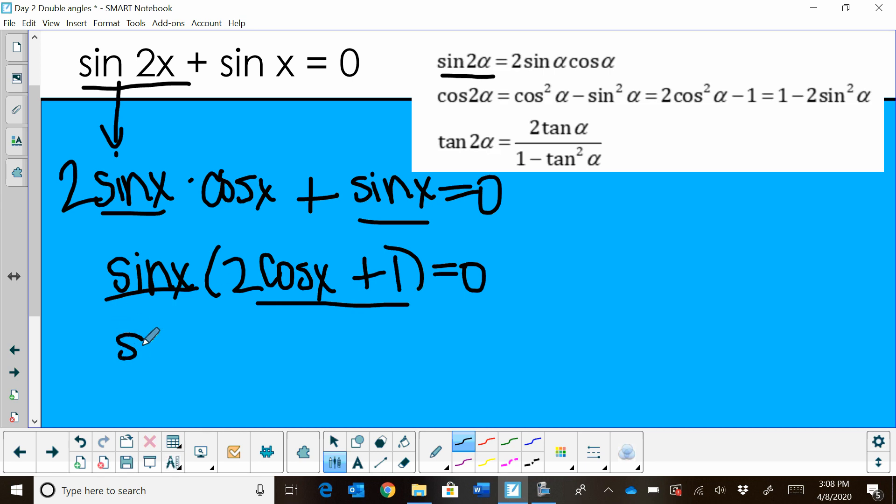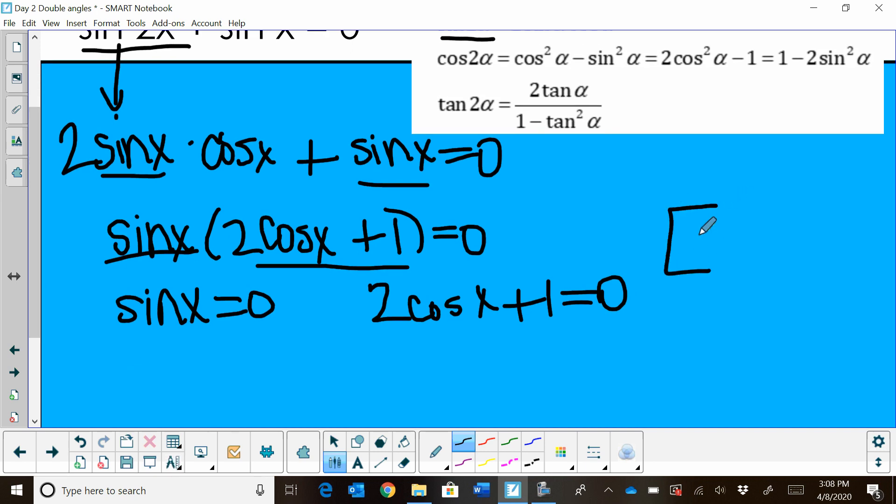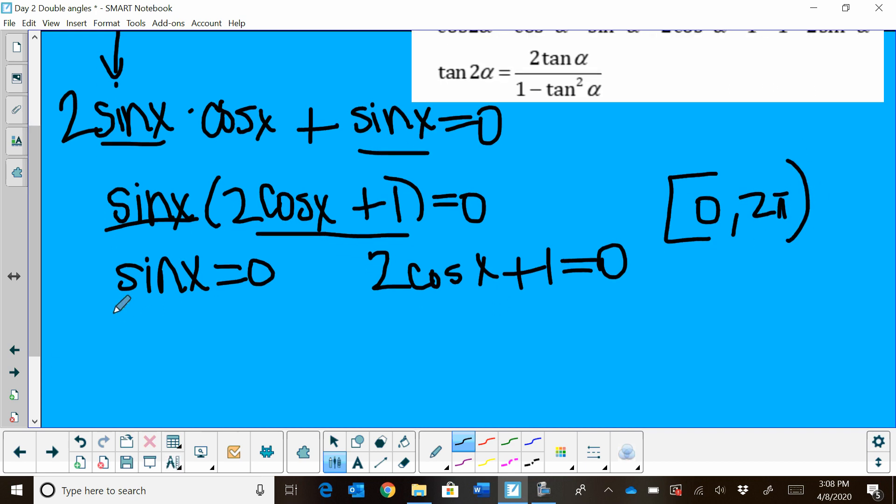So you're going to set sine x equal to zero because it's just a monomial, a term in the front. And then you're going to set the binomial cosine x plus 1 equal to zero. So set each factor equal to zero. And then we're looking at the interval zero to two pi. So let's find all values on the unit circle from zero to two pi where sine x is zero. Well, sine x is zero in two positions at zero and at pi.